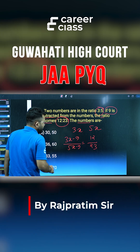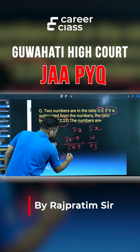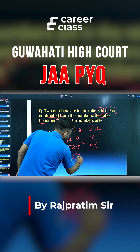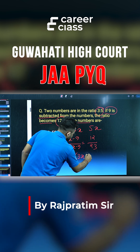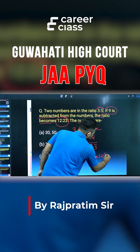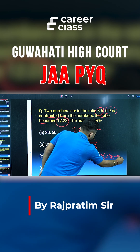We need to cross-multiply. Cross-multiply: 23 times (3x minus 9) equals 12 times (5x minus 9).